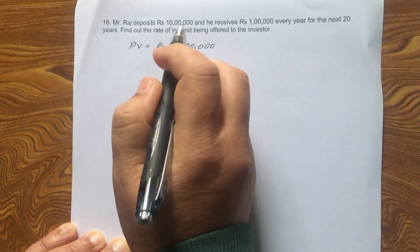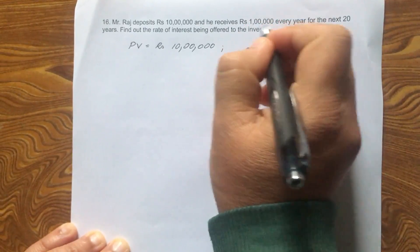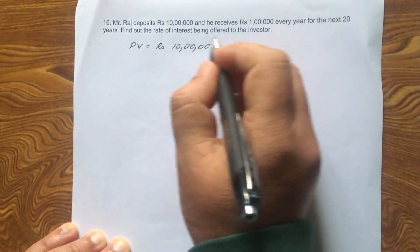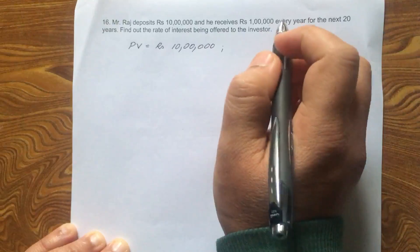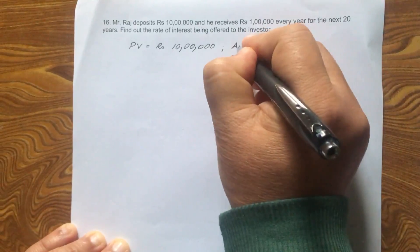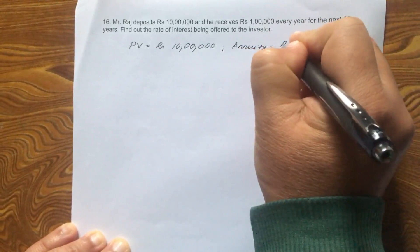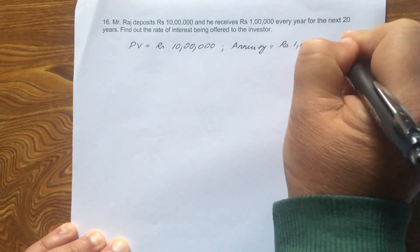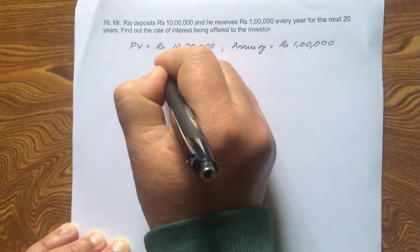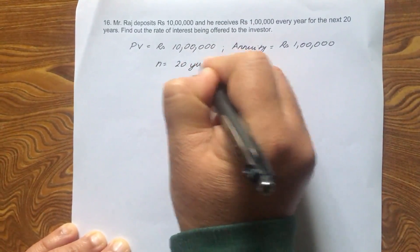So he deposits 10 lakhs today and he will receive 1 lakh every year. So he receives 1 lakh. What is that? What is that amount? 1 lakh every year. That is nothing but the annuity. So he is going to receive rupees 1 lakh or rupees 100,000 every year for the next 20 years. So you know what is N? N is 20 years.